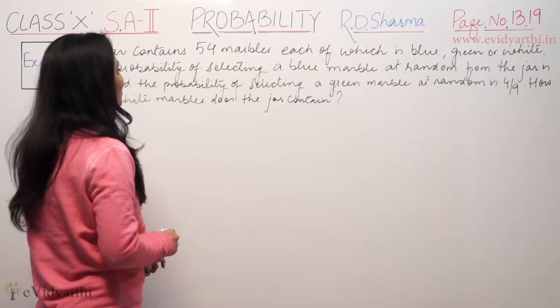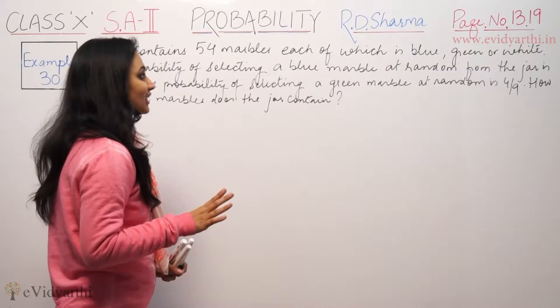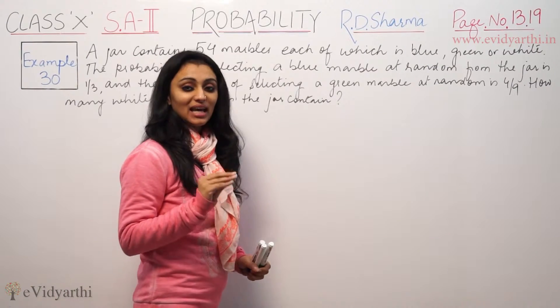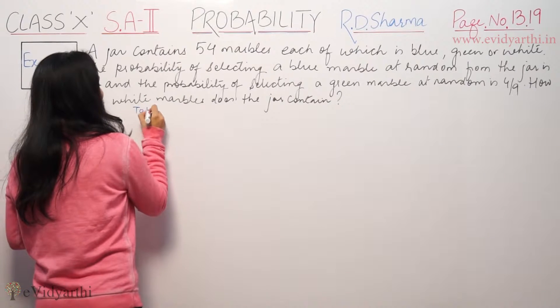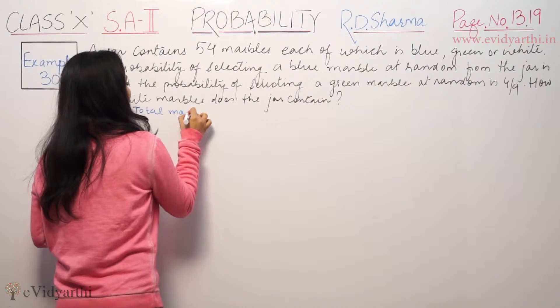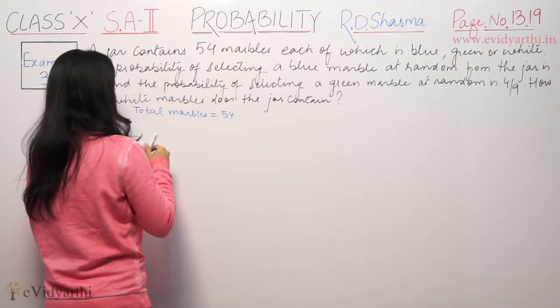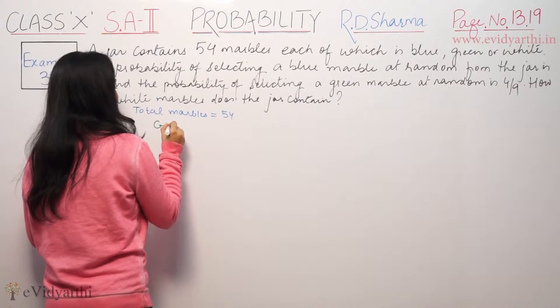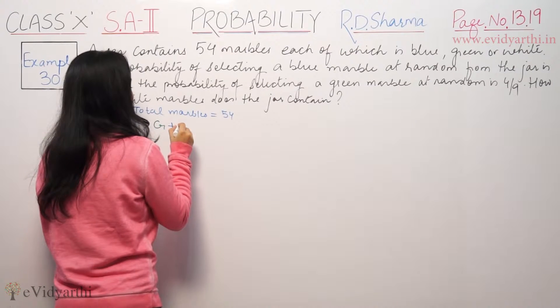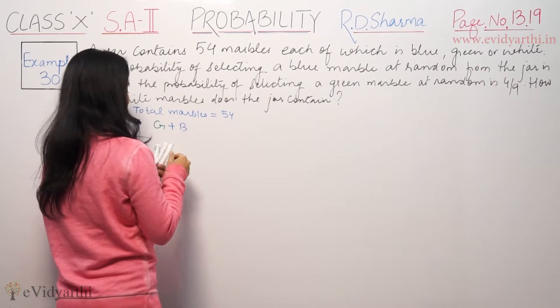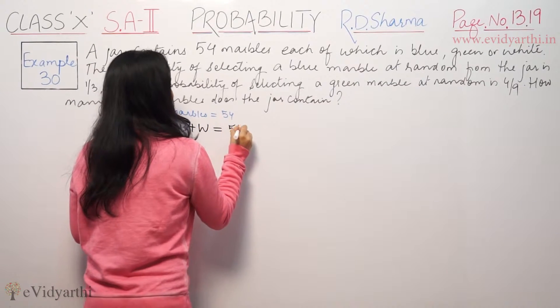It says a jar contains 54 marbles, each of which is blue, green or white. So total marbles we have 54, which is green marbles plus blue marbles plus white marbles, total is 54.